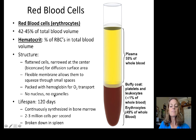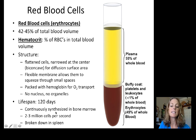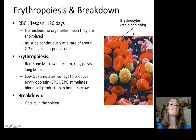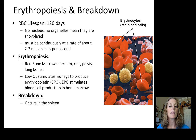Having no nucleus and no organelles maximizes oxygen transport but shortens lifespan — red blood cells live only about 120 days, because they cannot replace cellular components. This means they must be continuously synthesized in the bone marrow at a rate of about two to three million cells per second. Dead cells are sent to the spleen for recycling.